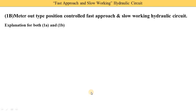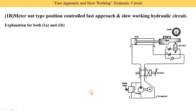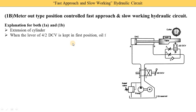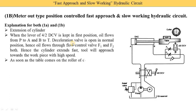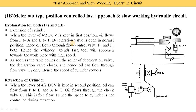The second type is the meter-out type position control fast approach and slow working hydraulic circuit. Meter-out means the deceleration valve assembly — F1, F2, and C — is installed at the outlet of the extension stroke. The B-port side is the outlet during extension. The theory is the same; there is only a change in the flow control valve position. The design of the table and workpiece has a slight corresponding change, but the operating principle remains identical.